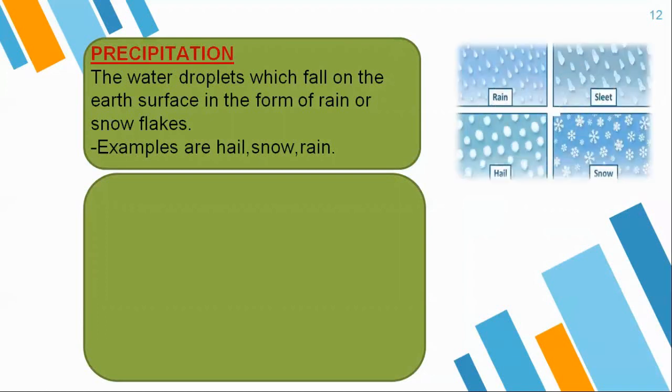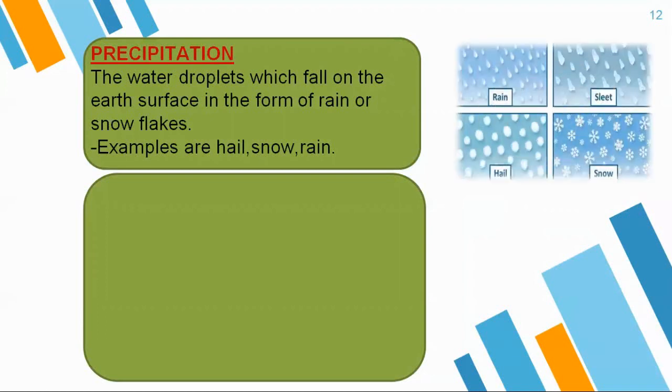Here you can see in the image — it falls in the form of rain, it falls in the form of sleet, it falls in the form of hail and snow.